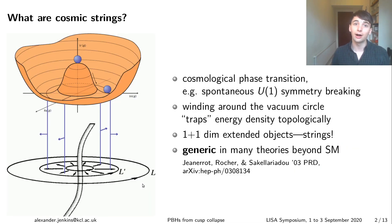So first of all, what are cosmic strings? The easiest way to explain this is to think about a simple cosmological phase transition where you have a spontaneously broken U(1) symmetry.